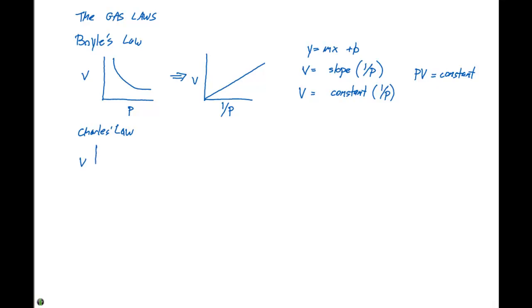He went and plotted volume versus temperature and carried out a variety of experiments and found that this relationship was linear. This is great, he didn't have to manipulate things like Boyle did. He said we can say that the volume is going to equal a constant times the temperature.